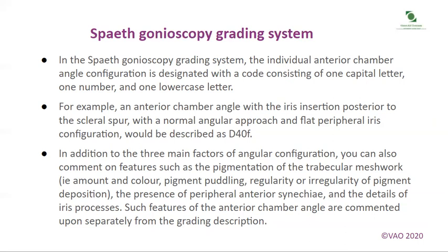In addition to the three main factors of angular configuration, you can also comment on features such as the pigmentation of the trabecular meshwork — that is the amount and colour — the pigment puddling, regularity or irregularity of pigment deposition, the presence of peripheral anterior synechiae and the details of iris processes. Such features of the anterior chamber angle are commented upon separately from the grading description.